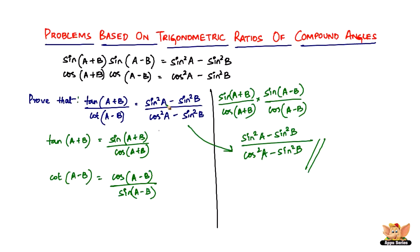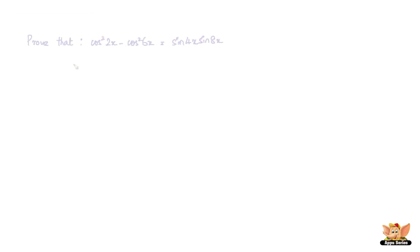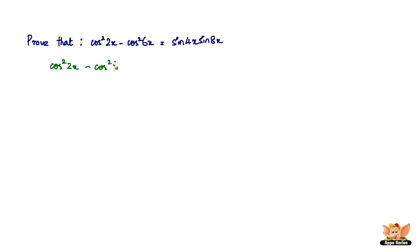Let's quickly solve another problem before we end this video. Here we have another problem which says prove that cos²2x minus cos²6x equals sin4x times sin8x. We've got cos²2x and minus cos²6x, and we need to convert this to sine.